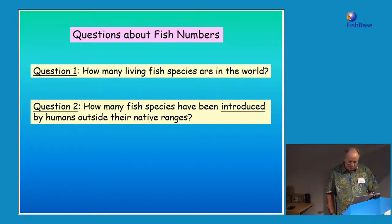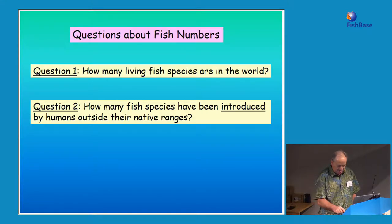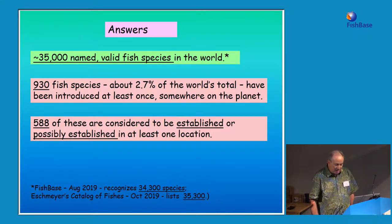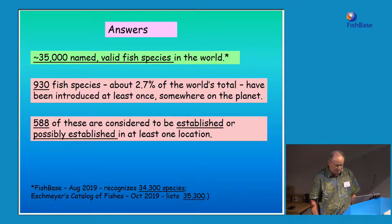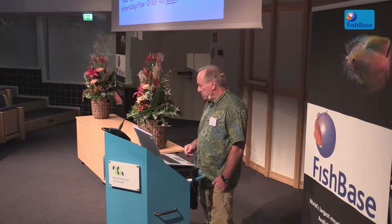I asked myself: how many fish species are in the world, and how many have been introduced outside their native range? According to experts, there are about 35,000 named valid fish species in the world. According to FishBase, 930 fish species — about 2.7% of the world's total — have been introduced at least once somewhere on the planet, and of these, 588 fish species are considered established or possibly established in at least one location.